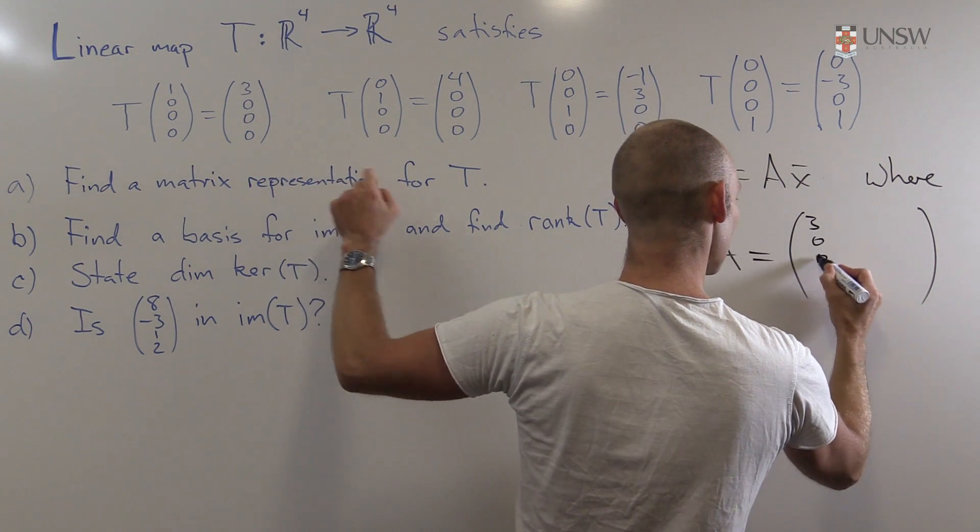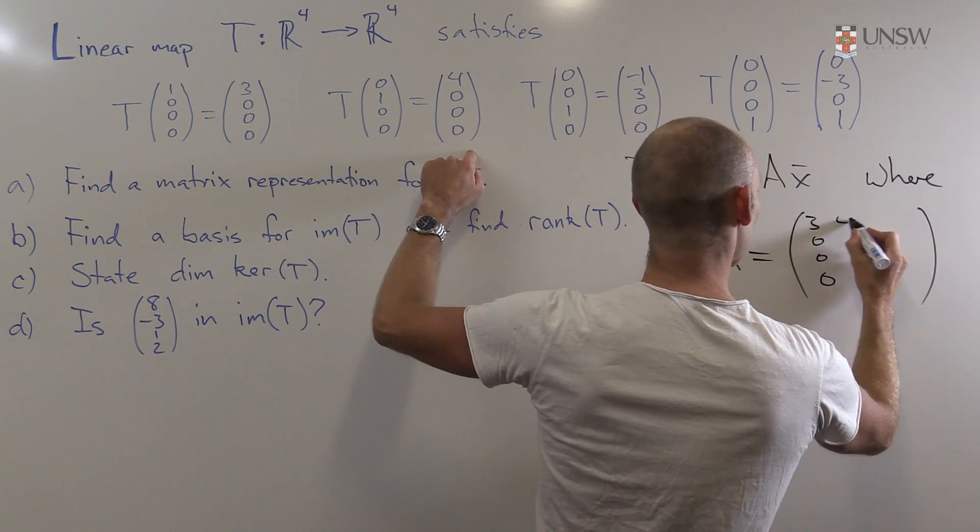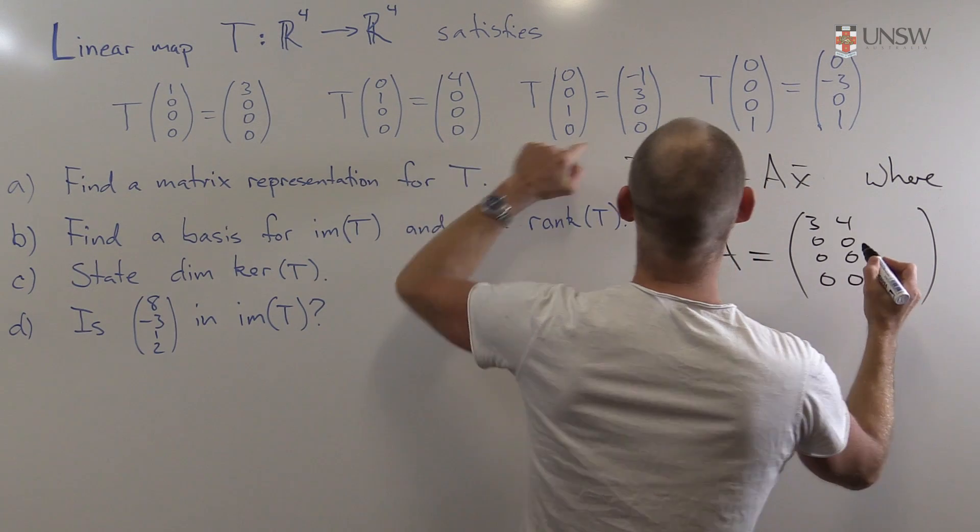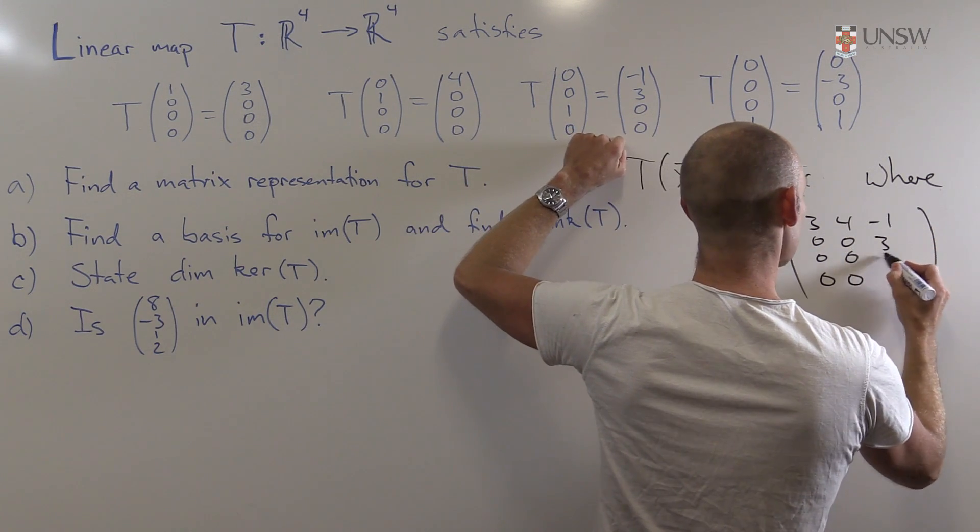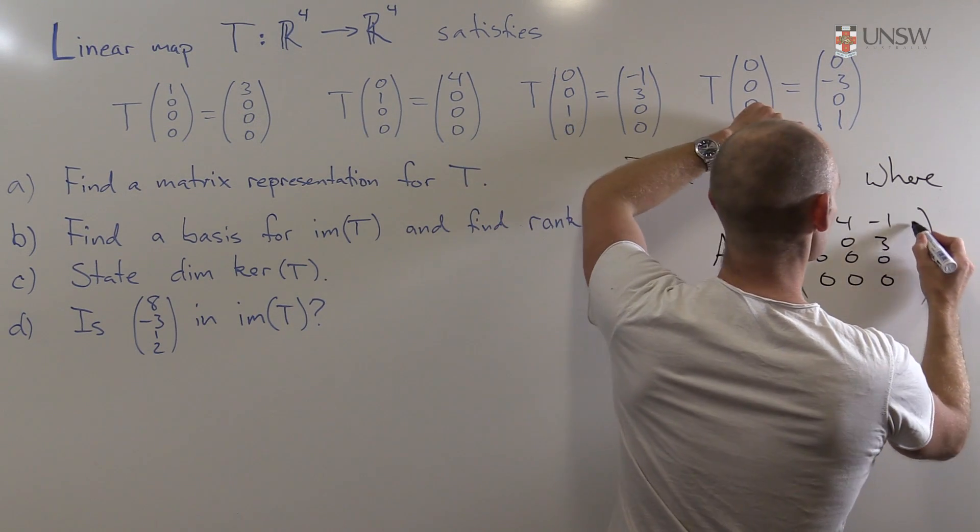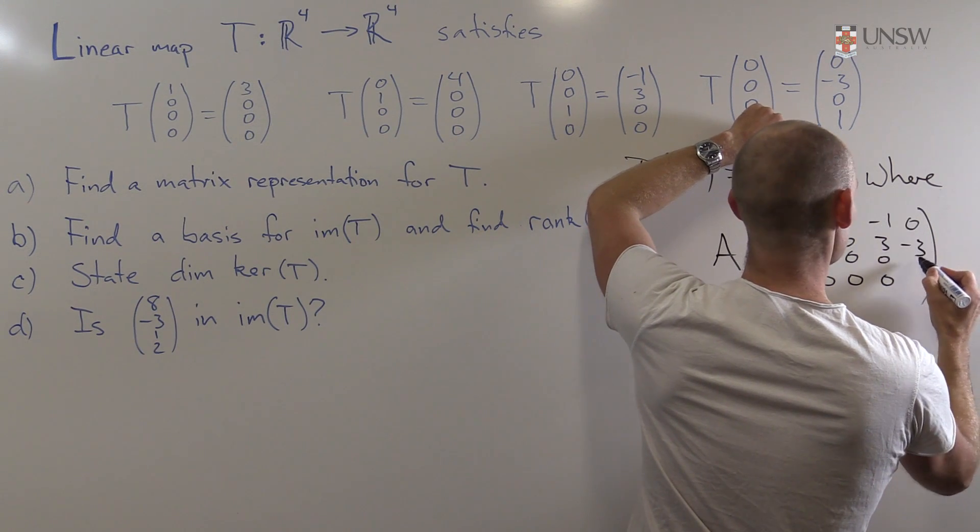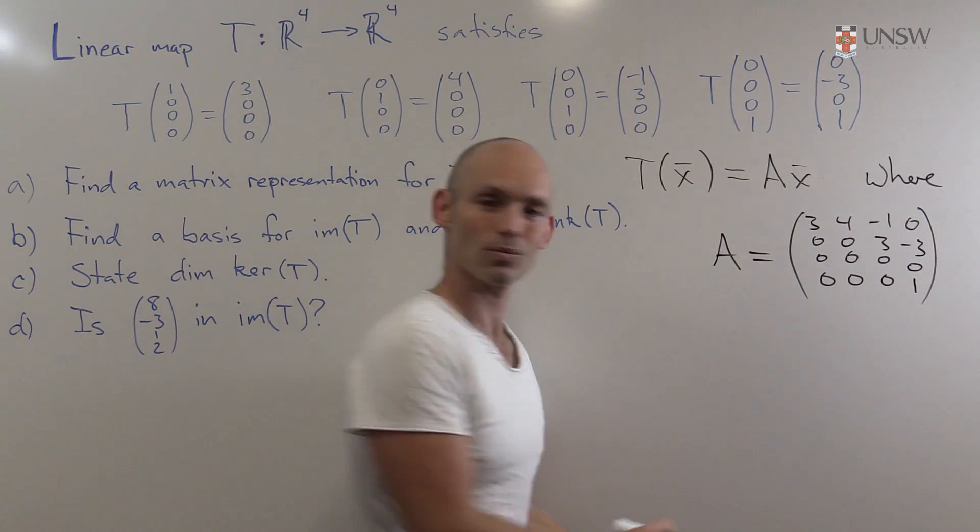Where A is simply just the matrix that we get by looking at these vectors here. So, 3, 0, 0, 0, 0, 4, 0, 0, 0, minus 1, 3, 0, and 0, minus 3, 0, 1. And we're done.